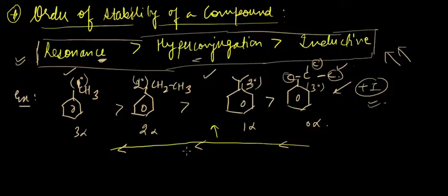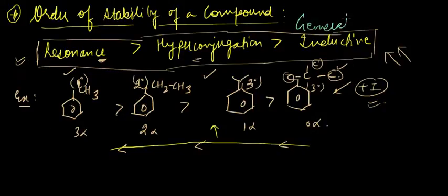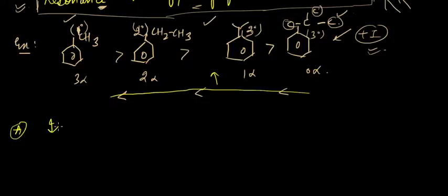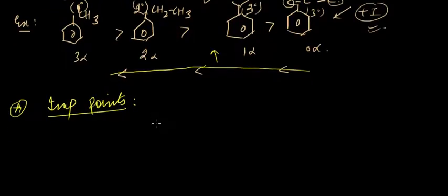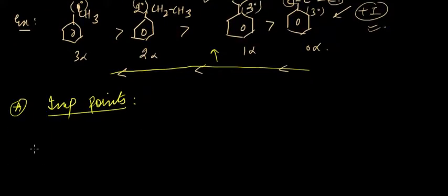By inductive effect the order would be reversed, but by hyperconjugation the order is experimentally proven. This is the general method — a rule of thumb — to find the stability of any organic compound. Now let us look at some important points from the exam perspective; these are very important and must be remembered. Let us deal with them on a case-by-case basis.